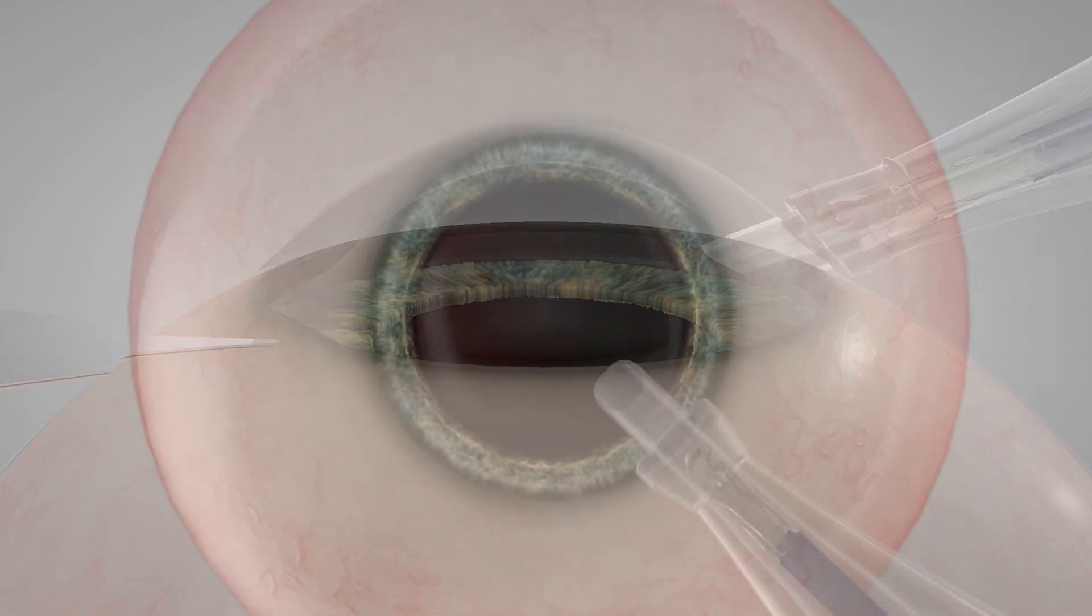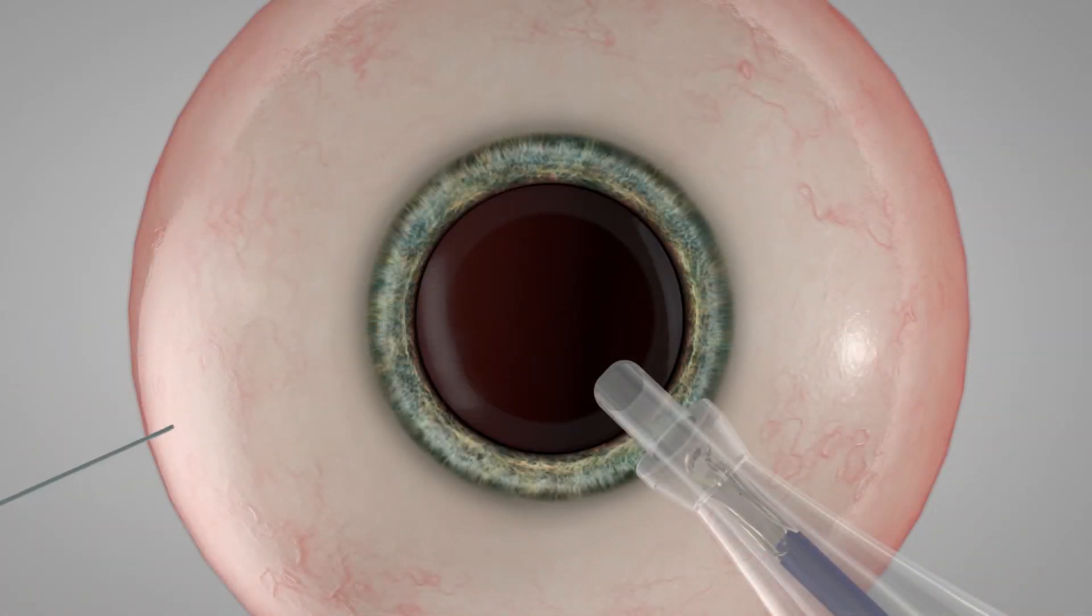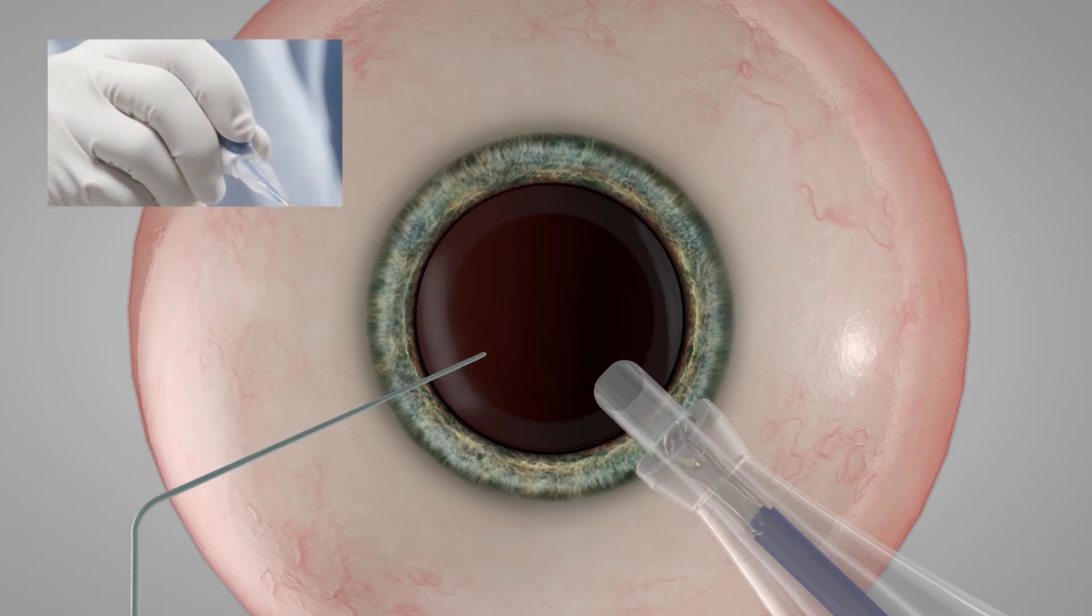The single-handed controls leave your other hand completely free, letting you stabilize the eye and keep more of your focus on your patient. During delivery, you can vary the plunger speed at any time by adjusting the pressure on the speed control lever.